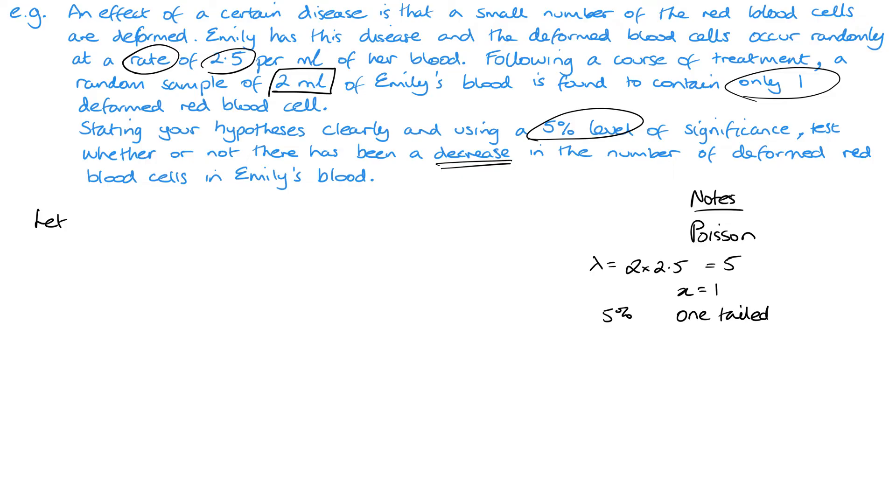So now I want to set it up properly. So let X represent—so that's kind of how I'm starting, X or Y—and then you want to take from the question: represent the number of deformed blood cells that occur randomly in two milliliters of blood. So I left the randomly bit though, because for this part now we can then add on that this is a Poisson, and then that is lambda.